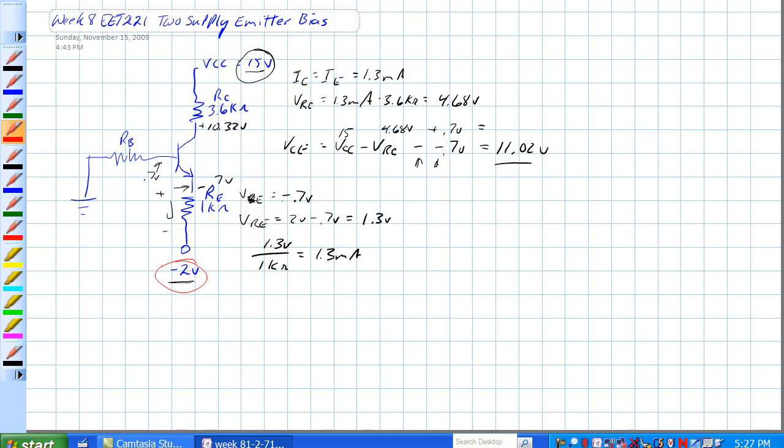This is a two supply emitter bias circuit. Sometimes in a circuit you will have positive and negative voltage sources.